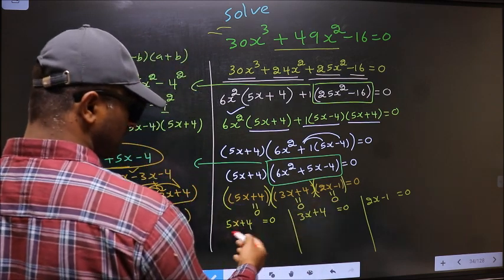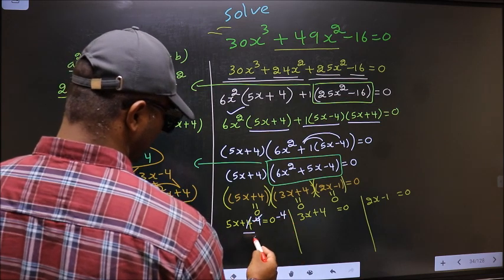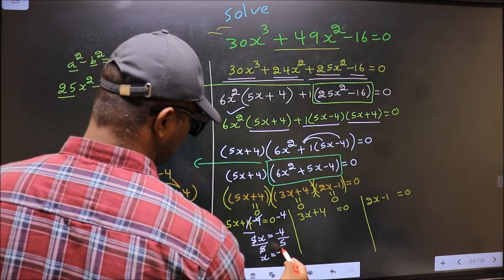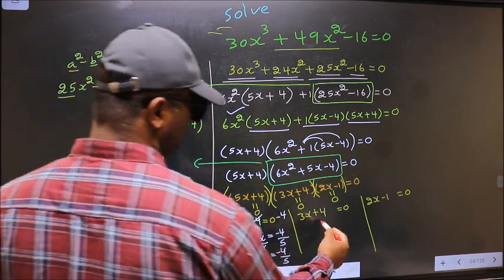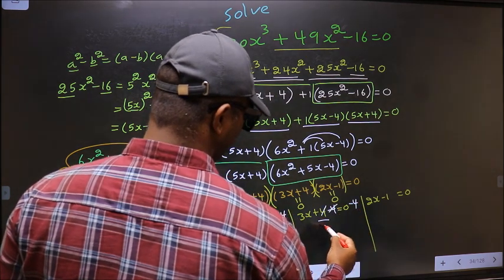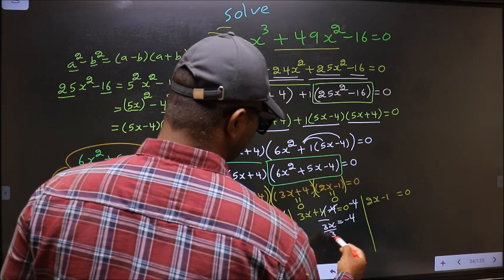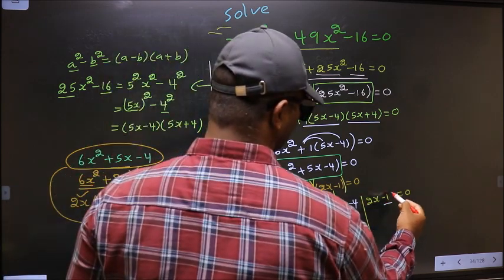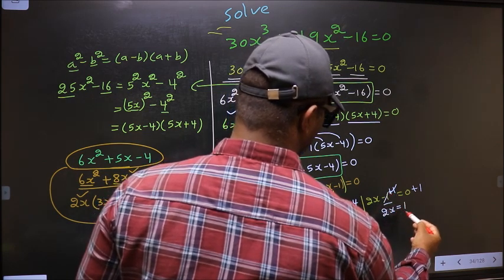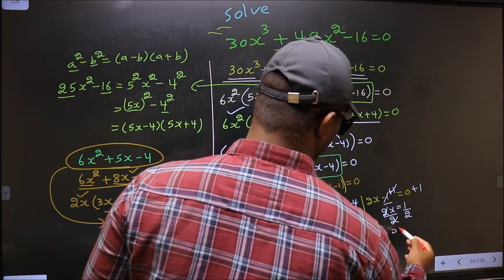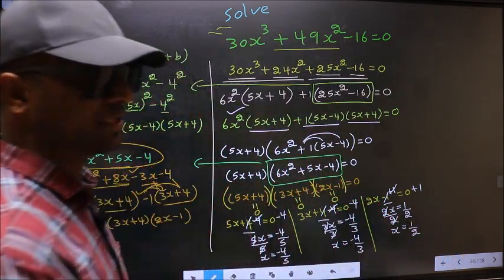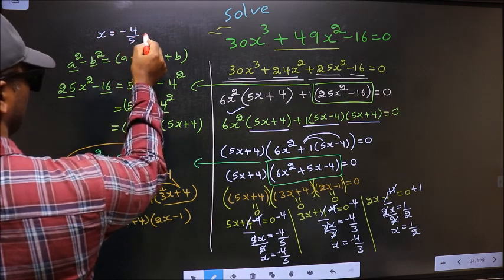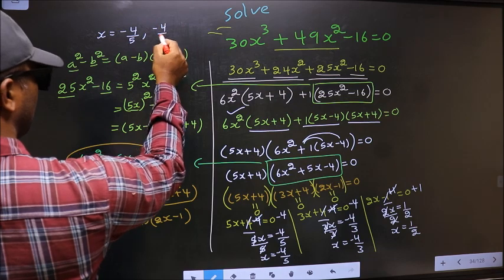From 5x + 4 = 0, subtract 4 to get 5x = -4, then divide by 5: x = -4/5. From 3x + 4 = 0, subtract 4 to get 3x = -4, then divide by 3: x = -4/3. From 2x - 1 = 0, add 1 to get 2x = 2, then divide by 2: x = 1/2. So the x values are -4/5, -4/3, and 1/2.